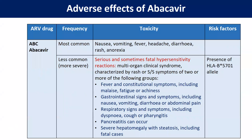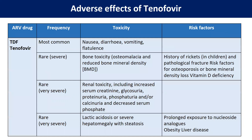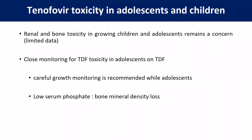What are the side effects of zidovudine? We have to do serial hemoglobin levels. The most common side effect is anemia and neutropenia — hematologic toxicity. We must monitor CBC whenever the patient is on zidovudine. Regarding tenofovir: we start it only when renal function is normal because it is a renal toxic drug. GI complications include nausea, vomiting, diarrhea, and flatulence. Renal and bone toxicity in growing children remains a concern, and close monitoring of tenofovir toxicity in adolescents on tenofovir should be done.